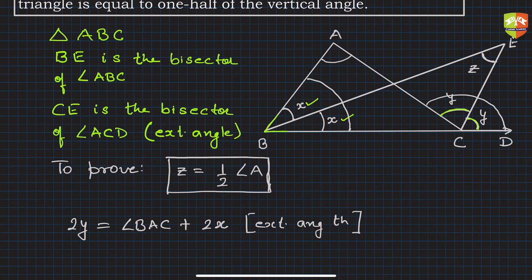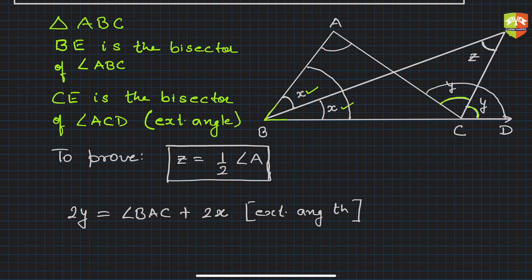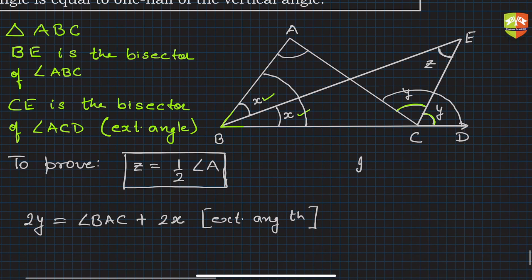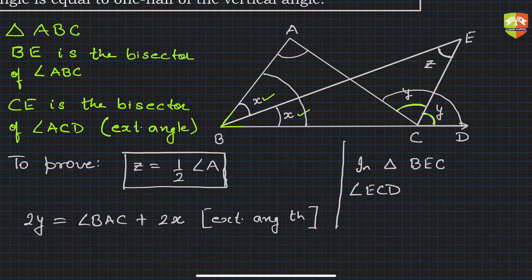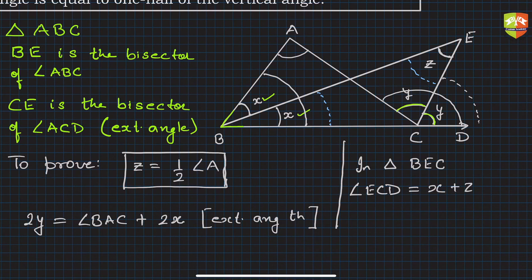Another one: in triangle BEC, angle ECD is the exterior angle. So the interior opposite angles give us angle ECD equals x plus z. Since angle ECD is y, we can write y equals x plus z. This is equation two.